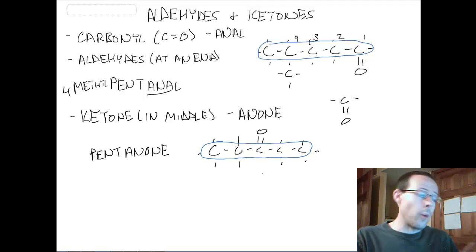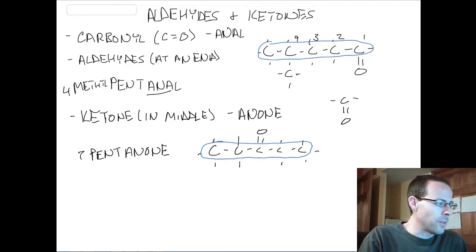And we need to denote where is the double bonded O, where's the carbonyl group. So it happens to be on my third carbon. So this is really three-pentanone. Again, we don't put numbers on the aldehydes because it's always on carbon number one. And then for pentanone, you just have to know where is the carbon.